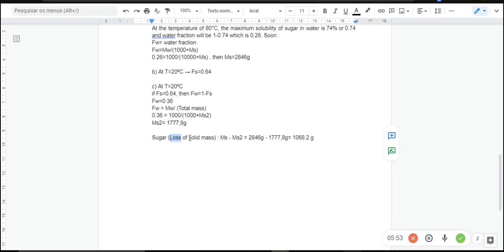The sugar loss of solid mass at this temperature, this is the mass of sugar at the temperature 80 Celsius degrees, less this new value of mass of sugar when it is at this new temperature. This is the mass of sugar in this temperature less the mass of sugar at this other temperature. The sugar will lose a total amount of solid mass of 1068.2 grams. That's okay.